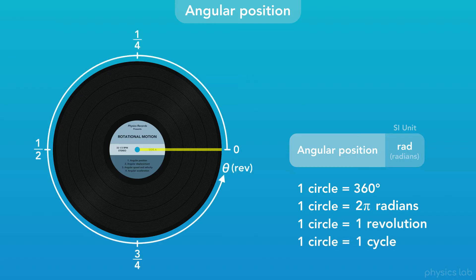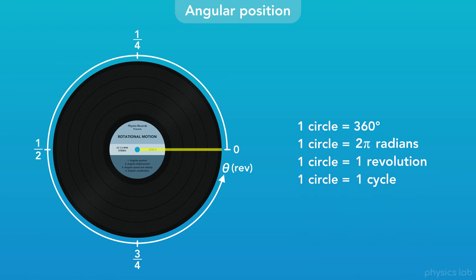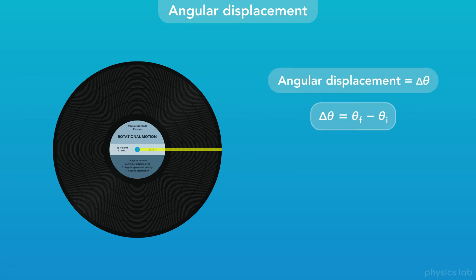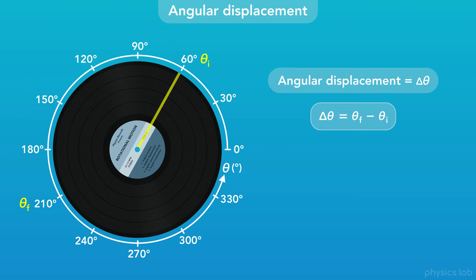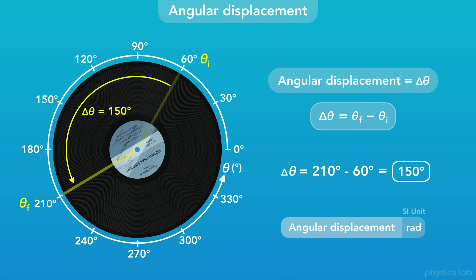We can also describe the angular position in terms of revolutions, or cycles. If an object rotates all the way around, that's one revolution, or one cycle, and we can label the axis using fractions. So those are the units we use to describe angular position, and we can use those relationships to convert between different units. Angular displacement, delta theta, is the change in angular position when an object rotates, which equals the final angular position minus the initial angular position. So if this record starts at an initial position of 60 degrees and rotates to a final position of 210 degrees, then the angular displacement would be 210 minus 60 degrees, which equals 150 degrees. The SI unit for angular displacement is radians.